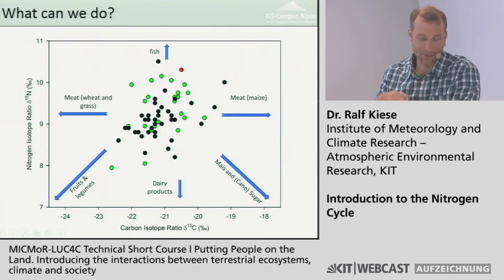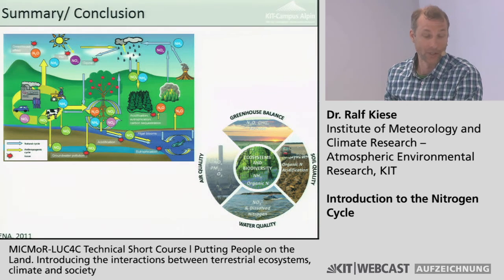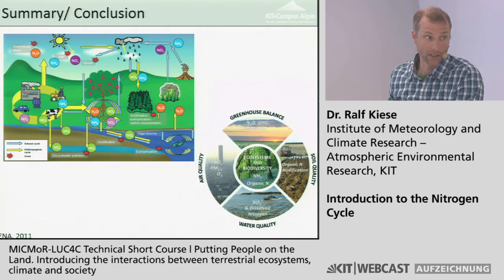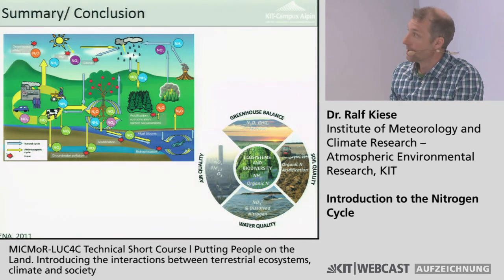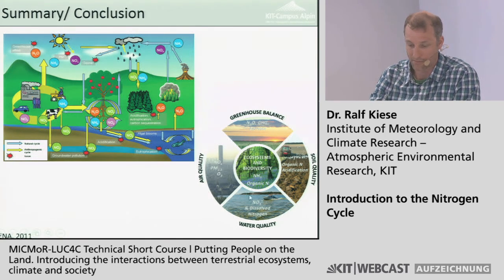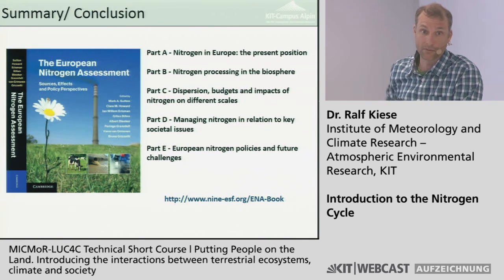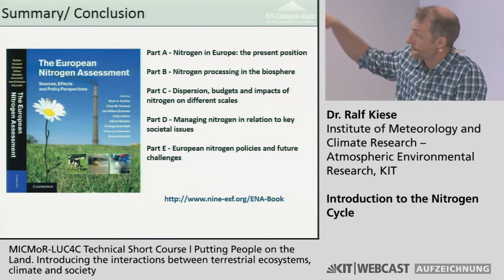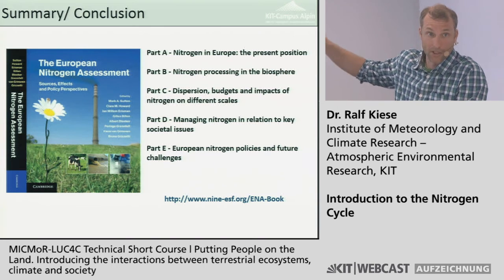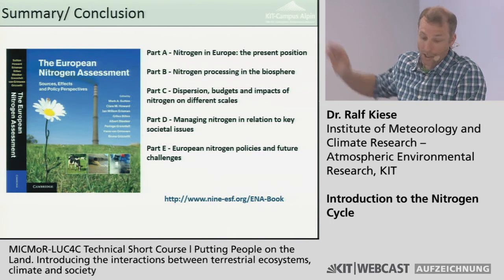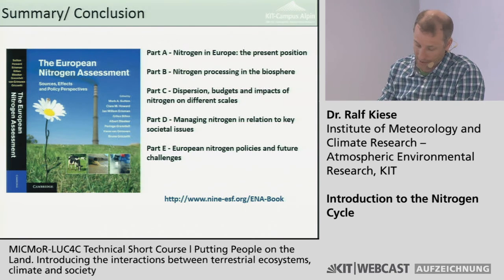Summary and conclusions: the nitrogen cycle is very complex with many different forms — organic, inorganic, reactive — transported along ecosystem compartments. We have excess nitrogen causing threats: increased N2O emissions as a greenhouse gas, ecosystem and biodiversity problems, water quality issues, air quality effects through NOx and ozone, and soil acidification. For those interested, most of this is summarized in the European Nitrogen Assessment, with different parts downloadable as PDFs.